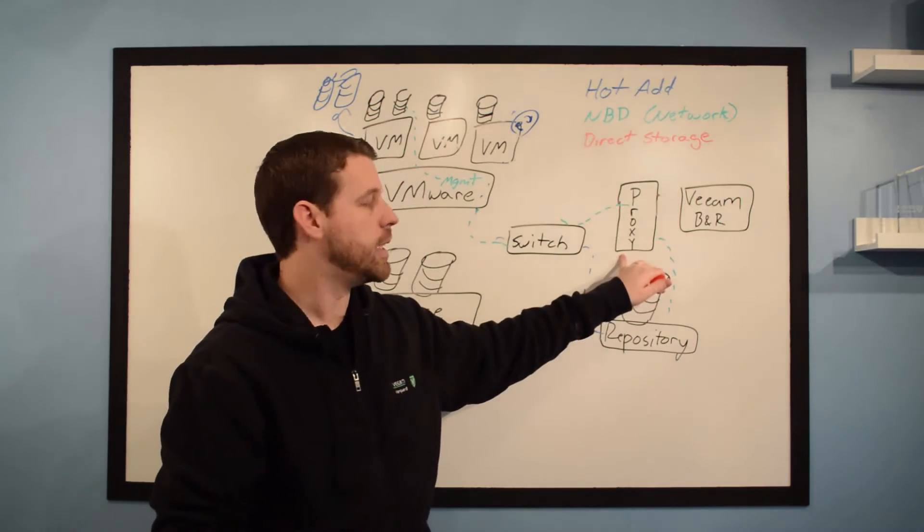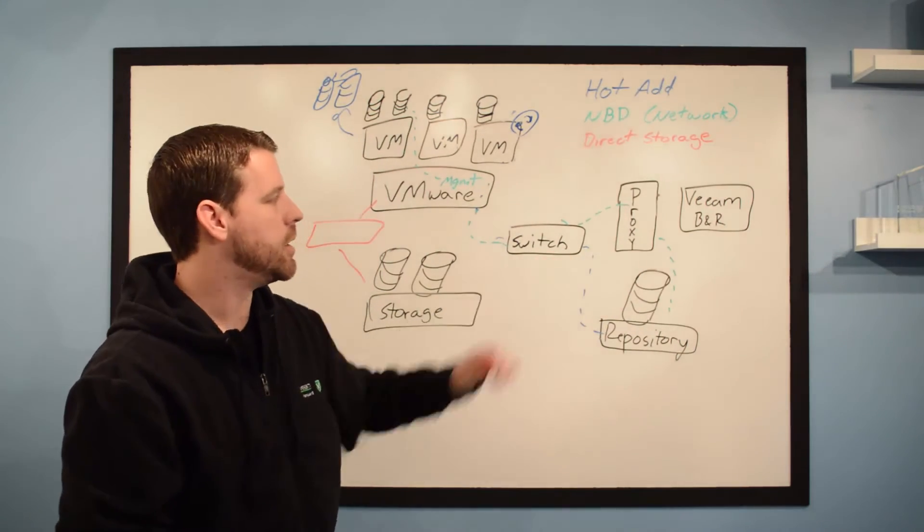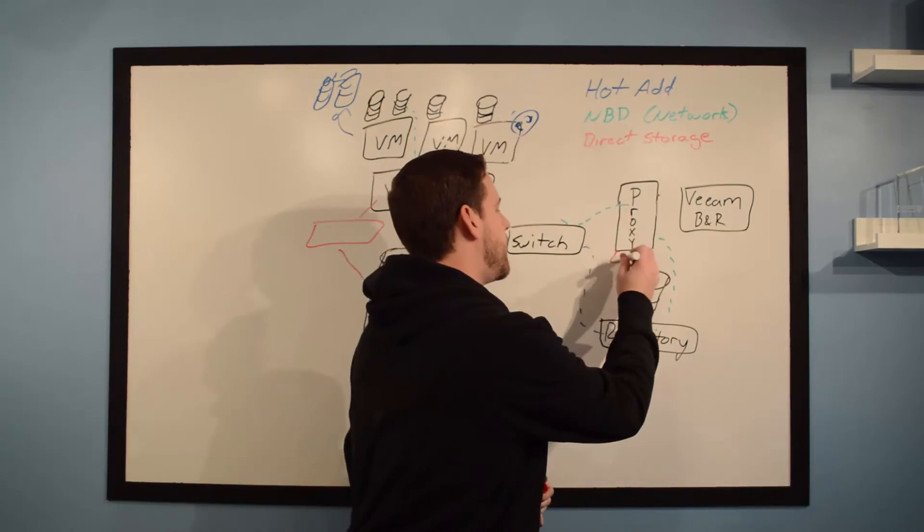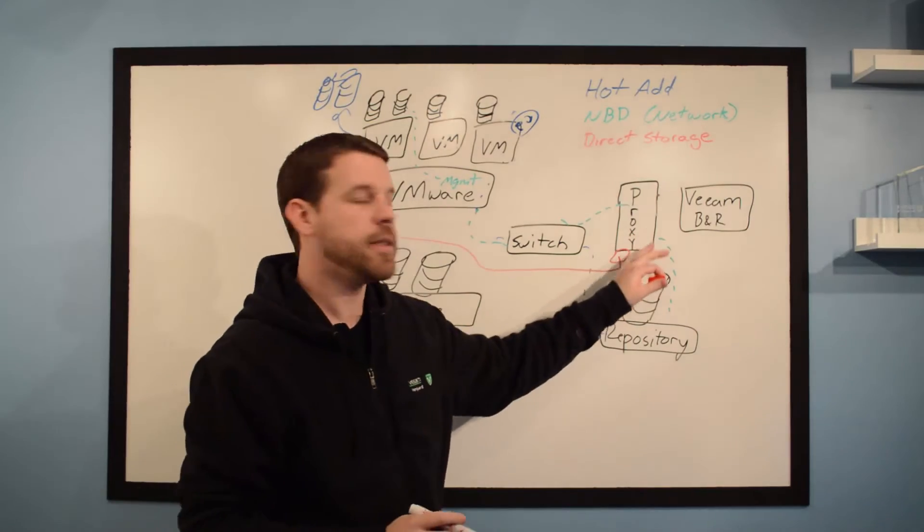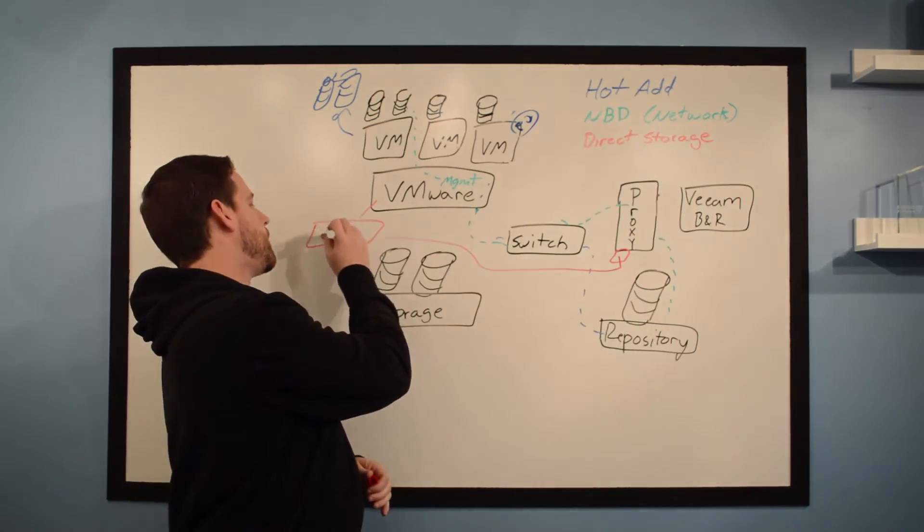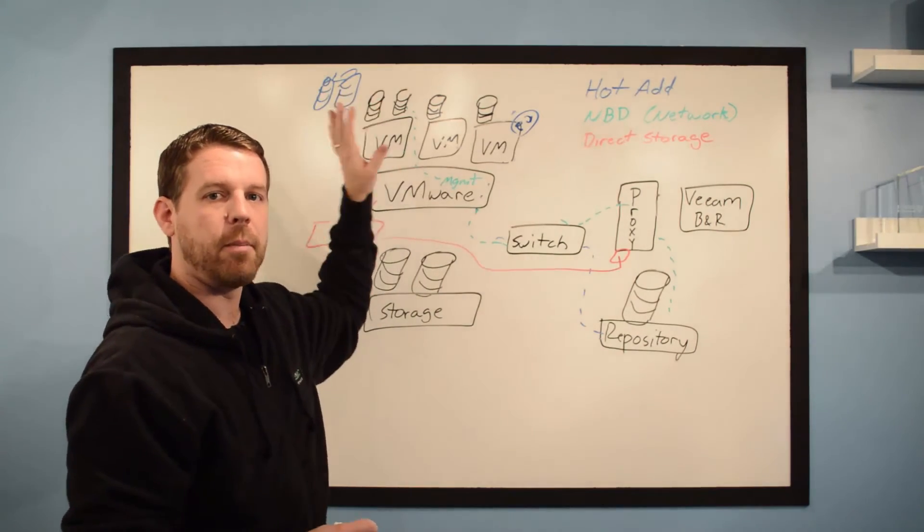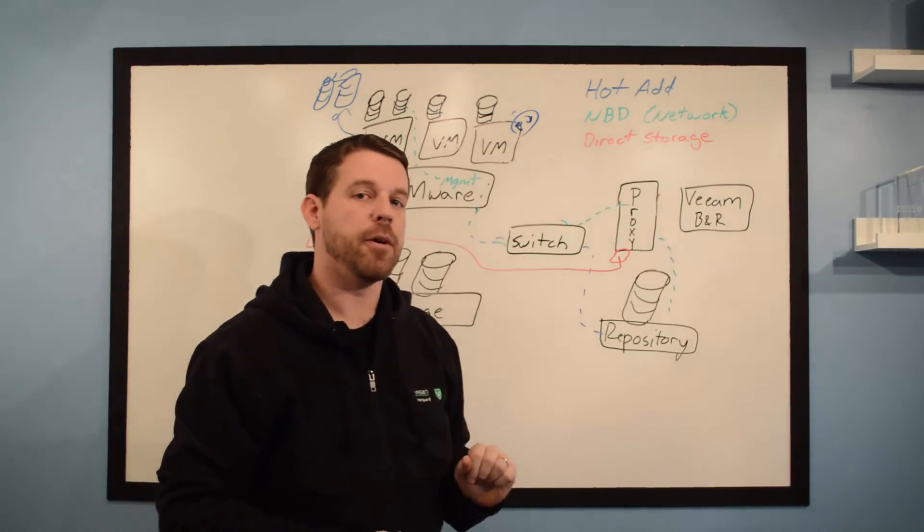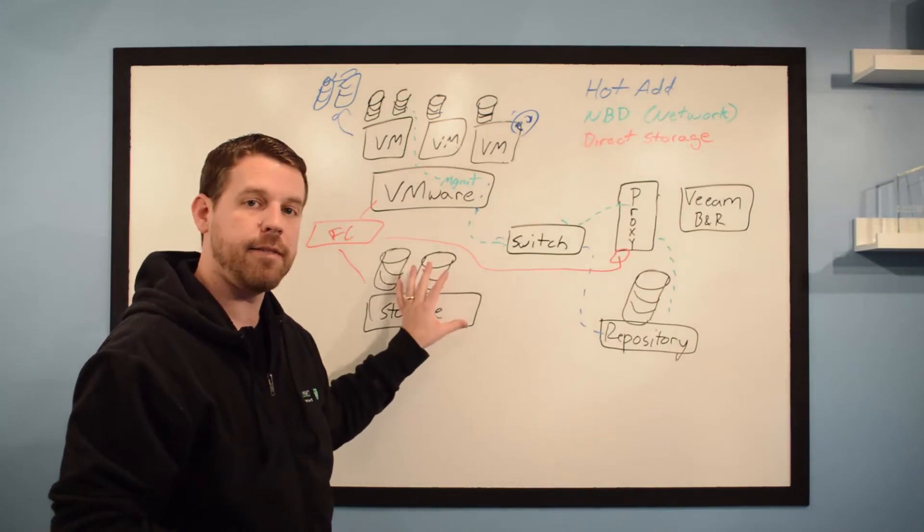Now in order for direct storage to work, our proxy server is going to have to have connectivity into that storage network. So this proxy we've installed a Fiber Channel adapter and we've connected it to our Fiber Channel switch. So we're going to do our snapshot up here like normal, but we're not going to have any traffic on the network because our proxy has access over here to the Fiber Channel side of things.